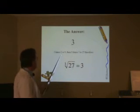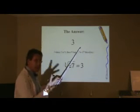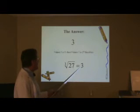You see, it's three times three times three. It's three times itself three times. That would result in 27, and therefore the cube root of 27 is three.